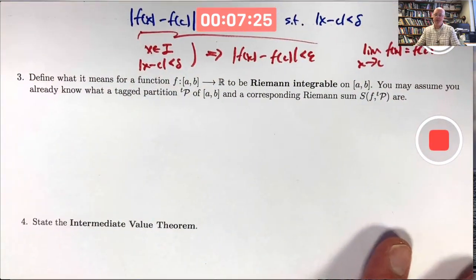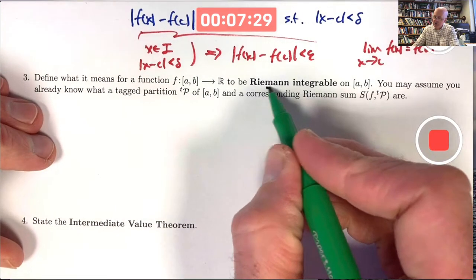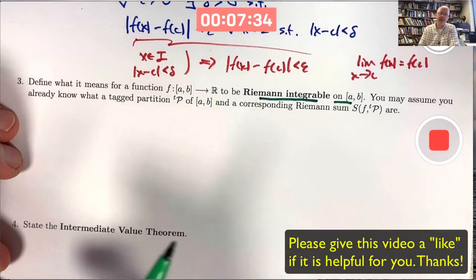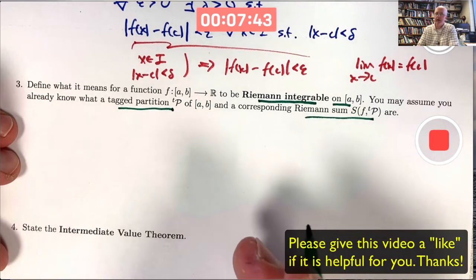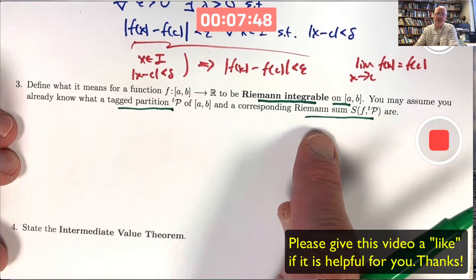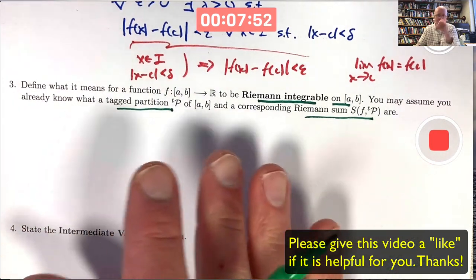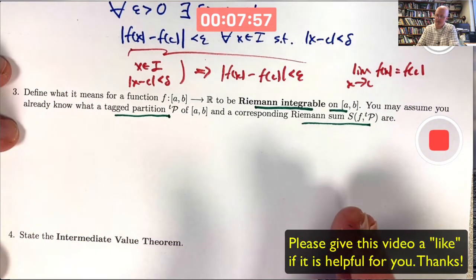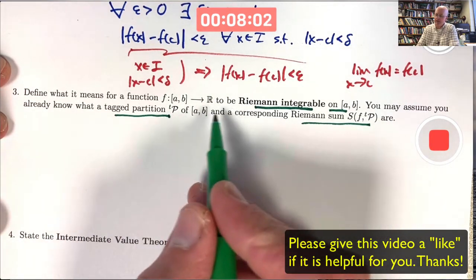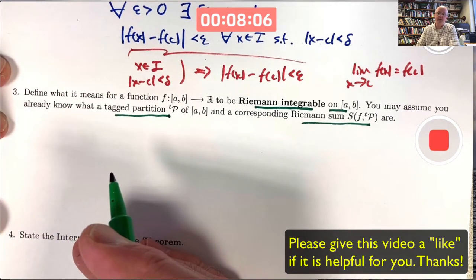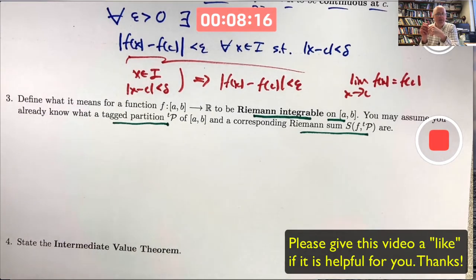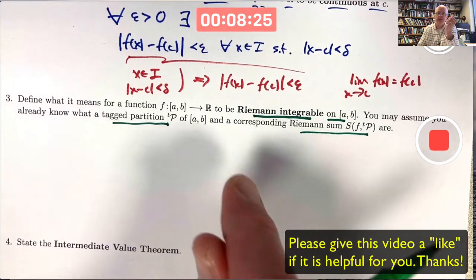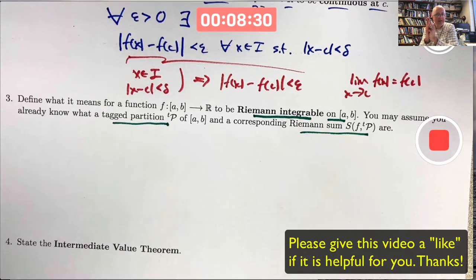Number three: define what it means for a function f to be Riemann integrable on the closed interval from a to b. We take this definition in terms of tagged partitions and Riemann sums. Other books use upper and lower sums. Intuitively, you're thinking of approximating the area under the graph by the sum of the areas of a bunch of rectangles, and you want the limiting values of those summations to get closer and closer to the true integral value L as all the rectangles get skinnier and skinnier.